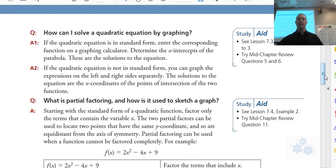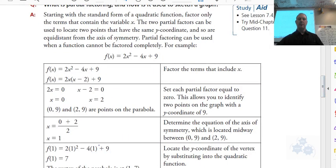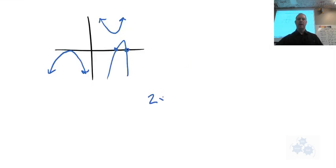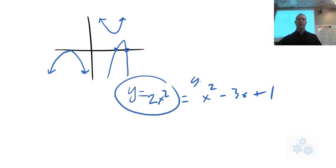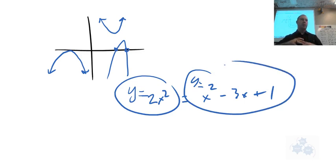The other method would be if you had 2x² = x² - 3x + 1, something like that, you could graph both sides. Graph both equations separately, and then find their intersection point or points. That's another way that you could do that.